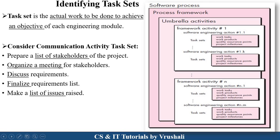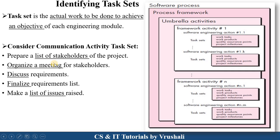The last topic is identifying task sets. Task sets means the actual work to be performed in each and every activity. Taking the communication activity task sets as an example — whether it is a small or large project — the tasks are: first, prepare a list of stakeholders present in the meeting; then organize a meeting and inform all stakeholders of the schedule and timing; then discuss requirements; finalize requirements; and finally make a list of issues — which type of issues are generated in the particular activity or project.